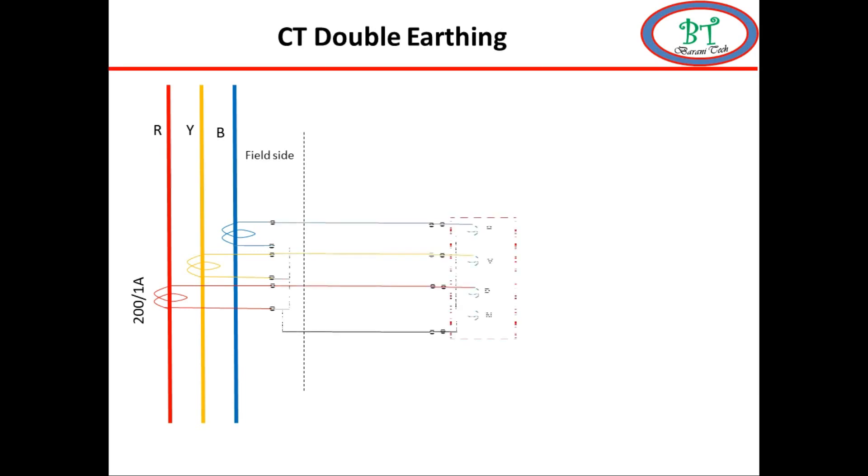And this CT ratio is considered as 200 bar 1 amps. This part is from the panel side which has protection and metering circuit. Let us consider the earthing of CT secondary on both side field and panel side.